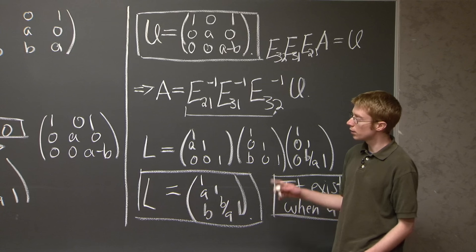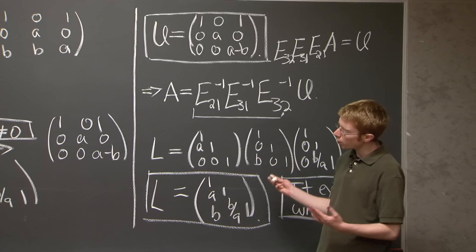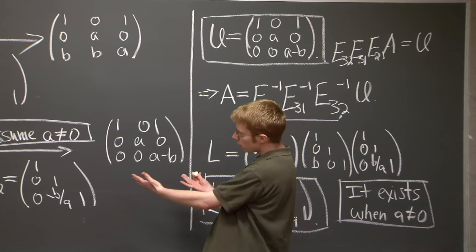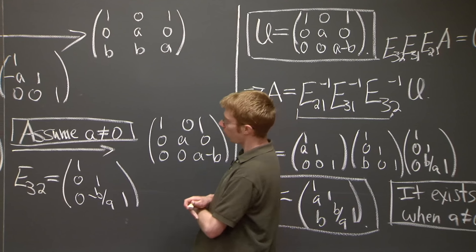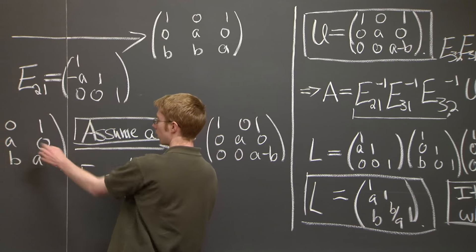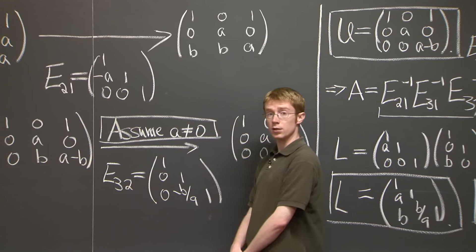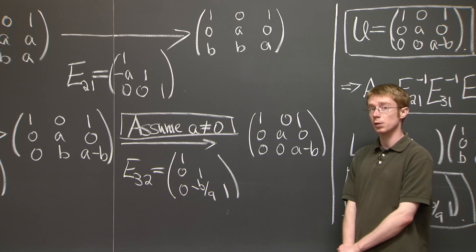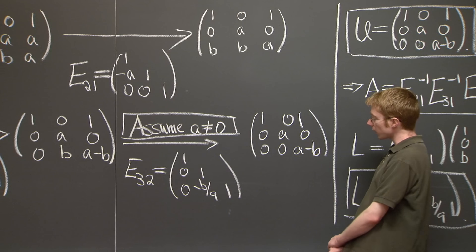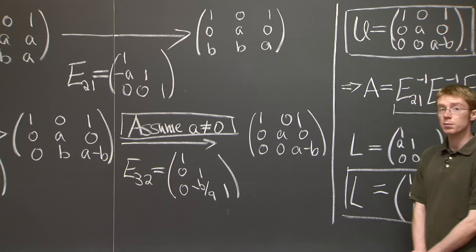Second comment is that you might be worried when you do this elimination process that, well, OK, we had to assume a is non-zero, because we wanted a non-zero pivot. You might worry that we might have to have a minus b be non-zero. But in fact, a minus b can be zero.